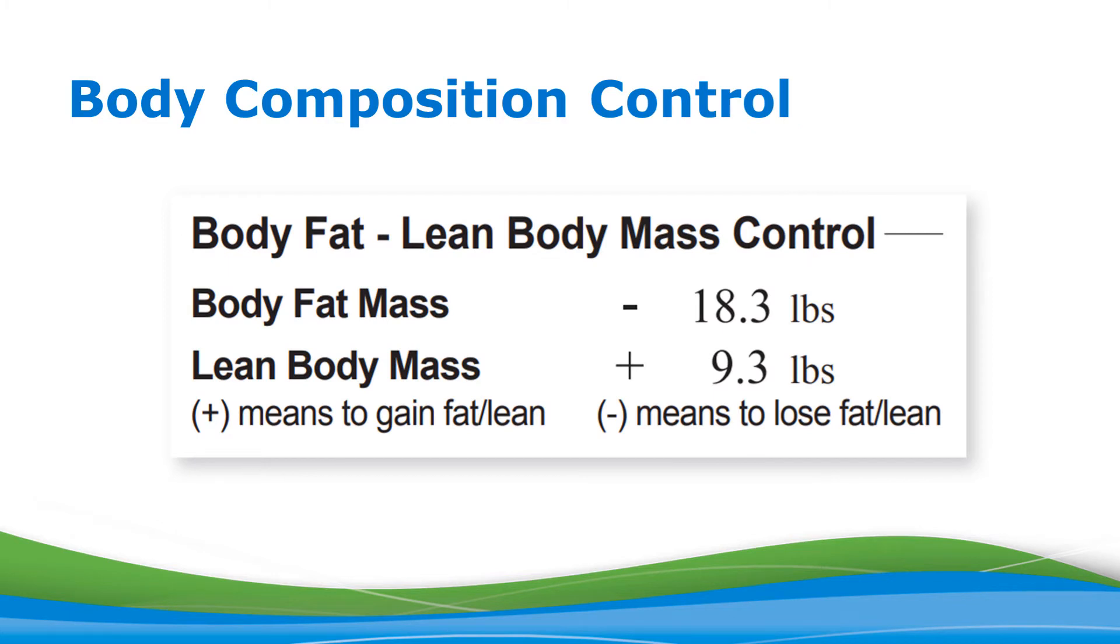Finally, back to the upper right portion, you see the body composition control. This is designed to help individuals reach an ideal body composition as per general health recommendations, defined as reaching the average percent body fat for your gender—15% for men and 23% for women. This section recommends adjusting body fat mass and/or lean body mass to reach that average. While this section is helpful, it's important to note it recommends based on a single exact average. As we've seen earlier, there can be a wide range of values considered normal. In our example, this individual is recommended to decrease body fat mass by 18.3 pounds and increase lean body mass by 9.3 pounds.